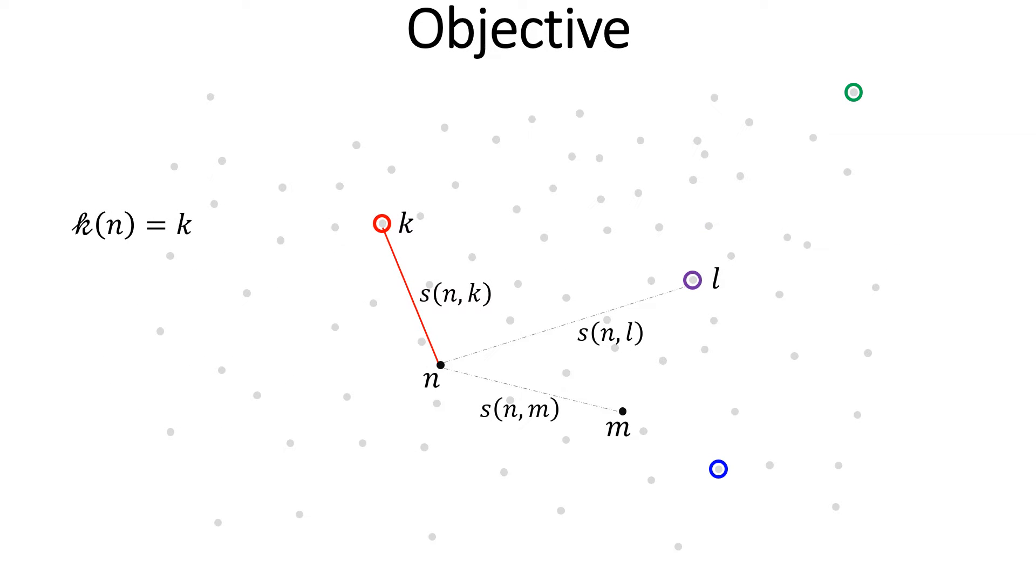Suppose k is the exemplar of point n. L is another exemplar and m is another point.